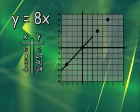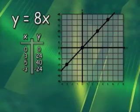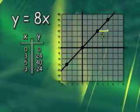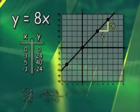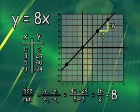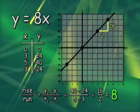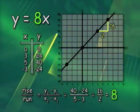We can graph the equation by choosing and connecting a few points. And if we determine the slope, either by using the graph or by calculating it with our formula for slope, we find that the slope of 8, which is our rate of change, is the same as the constant of variation.